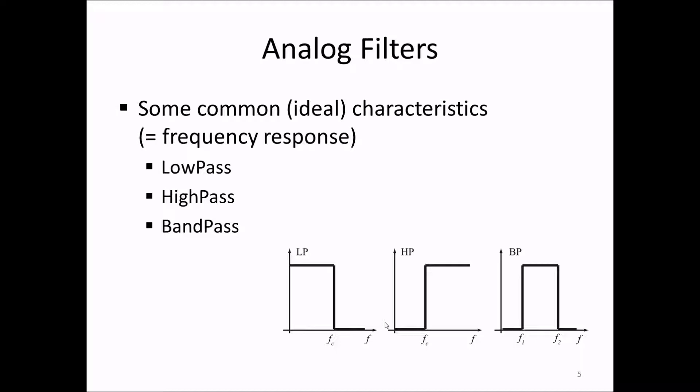The three most common types of filters are the low pass, the high pass and the band pass filters. The low pass filter should ideally completely block all signals above a certain frequency which we call the cutoff frequency f sub c. A high pass filter should completely block all the frequencies below the cutoff frequency of that filter.